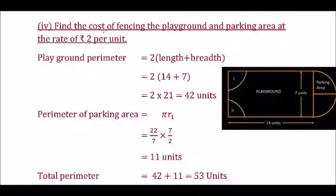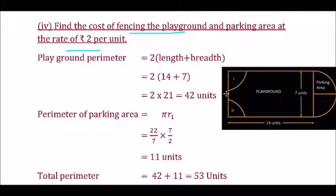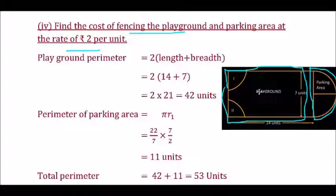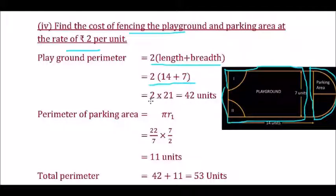Find the cost of fencing the playground and parking area at the rate of Rs. 2 per unit. We find the perimeter of both shapes and add them, then multiply by Rs. 2. Playground perimeter = 2 × (length + breadth) = 2 × (14 + 7) = 2 × 21 = 42 units. Perimeter of the parking area = π × r1 = 22/7 × 7/2 = 11 units.